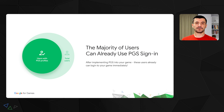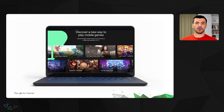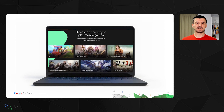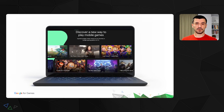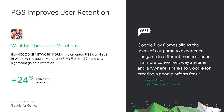I want to also give you an idea of the reach of PGS. The majority of Android users already have a PGS profile — all these users can sign into your PGS-enabled game immediately. All of these benefits of PGS V2 have led to strong adoption, and it is already used in some very popular titles like Asphalt 9 Legends, State of Survival, and Cookie Run: Overbreak. After launching PGS support in the game Wealthy VHM Merchant, Blancozone Network Korea has seen a 24% improvement in early game retention. We know every game is different, and we're looking forward to hearing what other benefits PGS brings to you and your users.